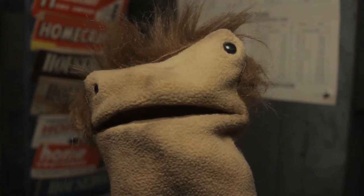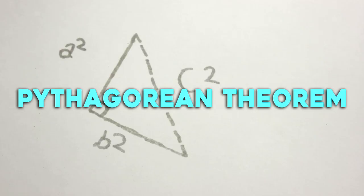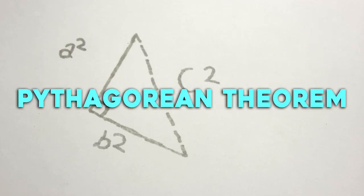Today we can talk about Pythagorean theorem and how you can use it to measure things. Basically, a squared plus b squared equals c squared.